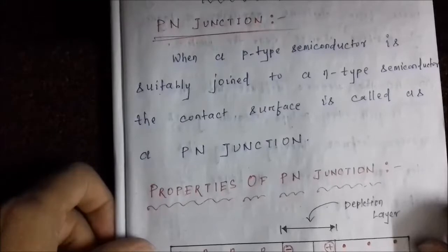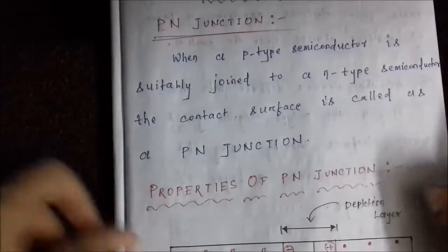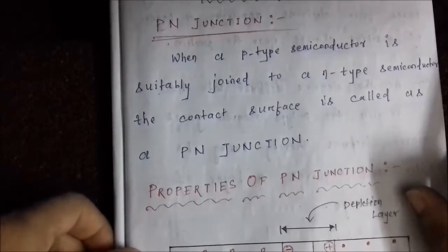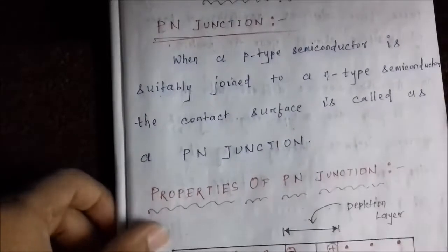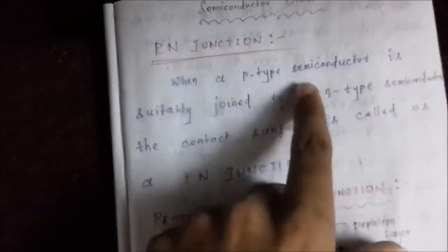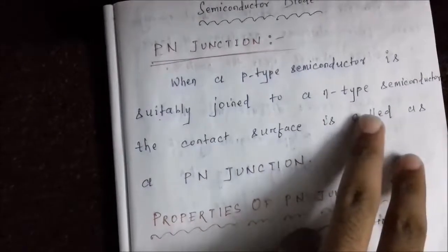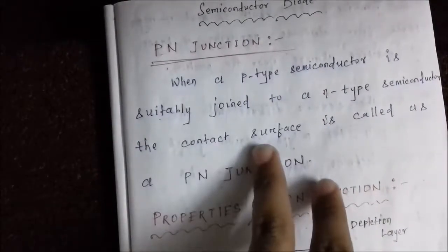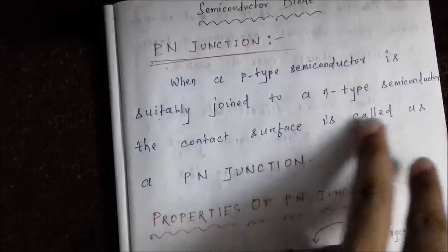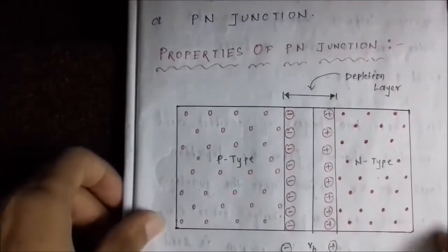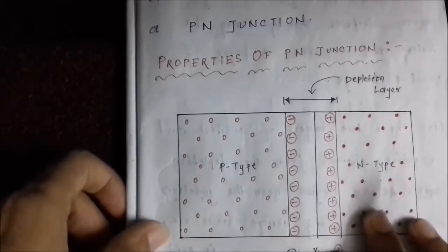A PN junction is a contact between a P type material and an N type material. More formally, we can define it as: when a P type semiconductor is suitably joined to an N type semiconductor, the contact surface between the two is called as the PN junction.